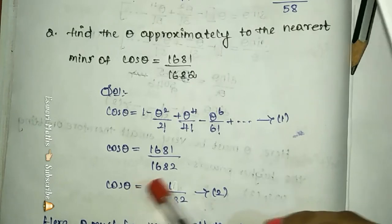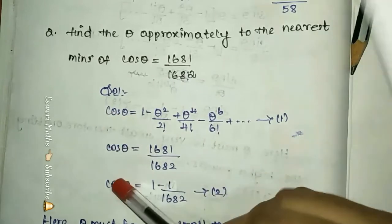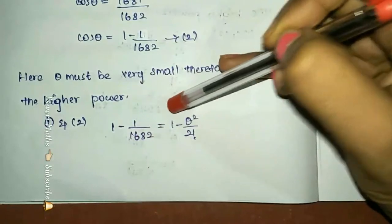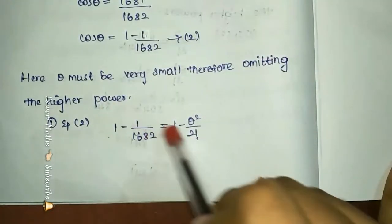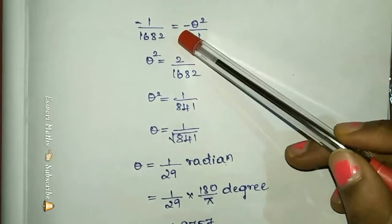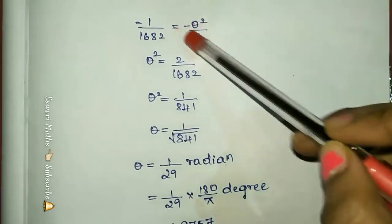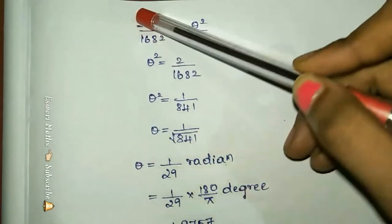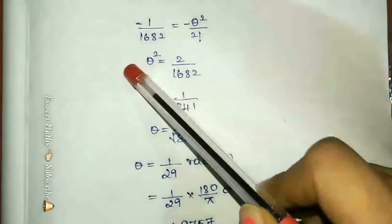If we cross multiply, the denominator is 1682. We write these two equations: cos theta equals cos theta, so we equate them. Now 1 minus 1 by 1682 equals 1 minus theta square by 2 factorial. The two 1s cancel. So 1 by 1682 equals theta square by 2 factorial. Minus and minus cancel. Therefore theta square equals 2 by 1682, which equals 1 by 841.